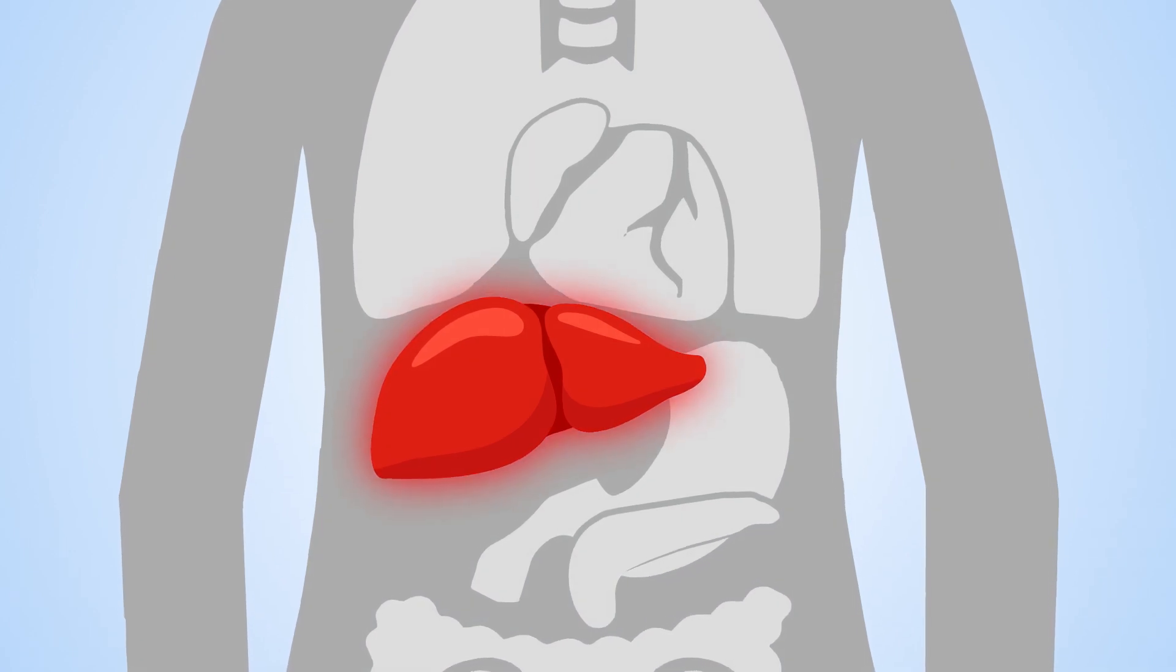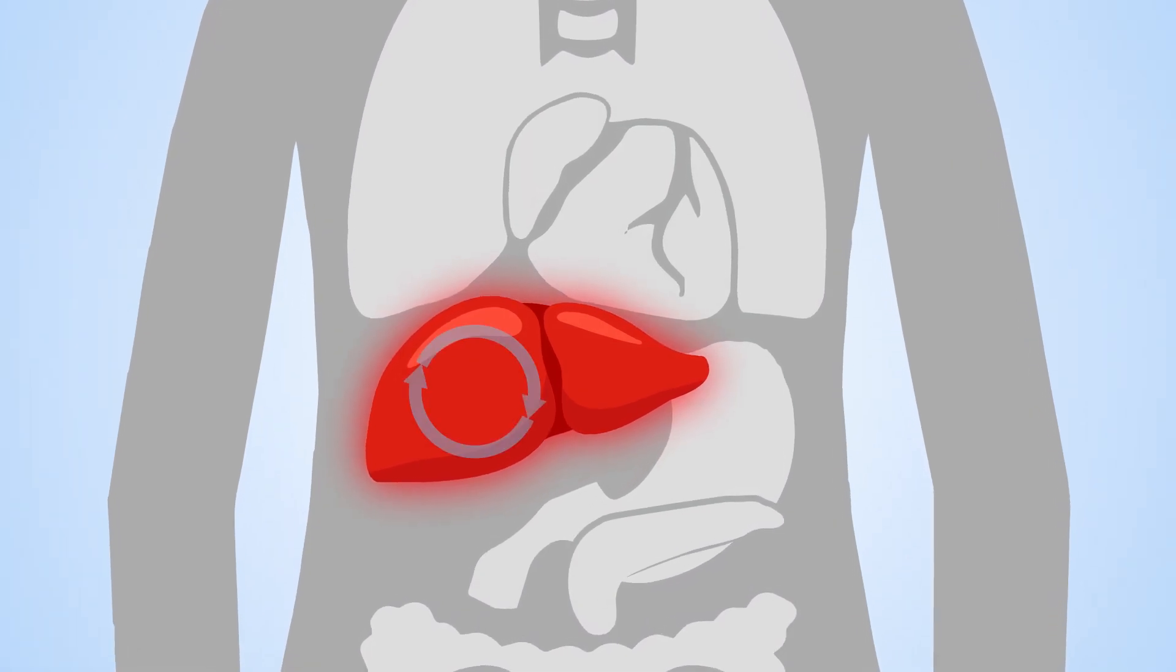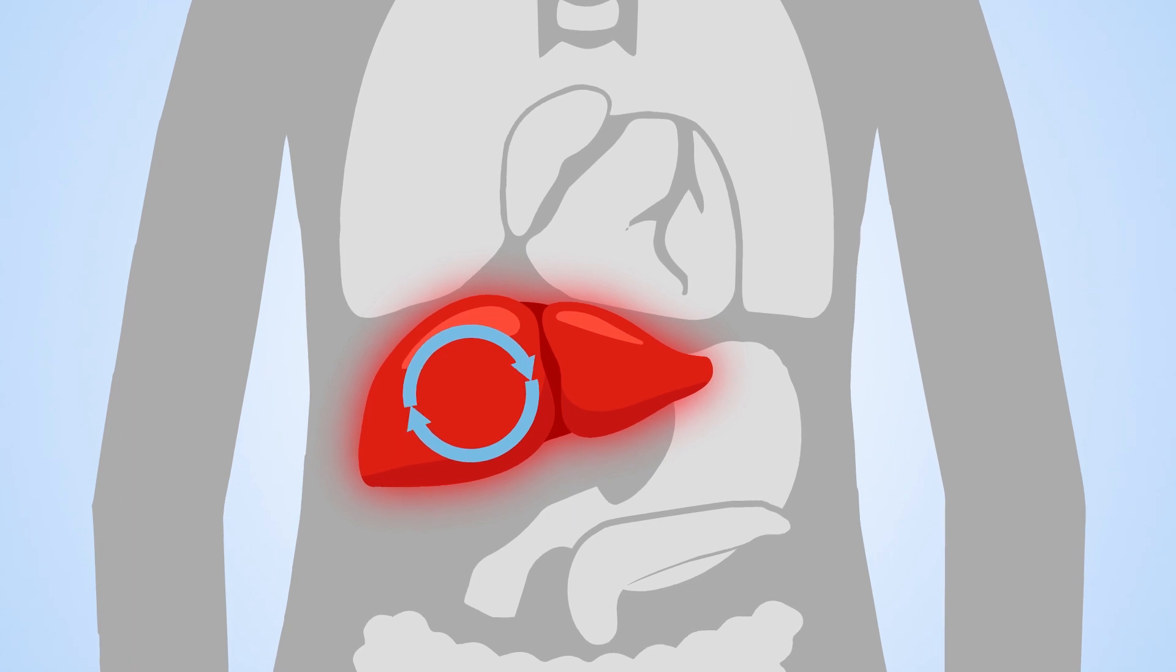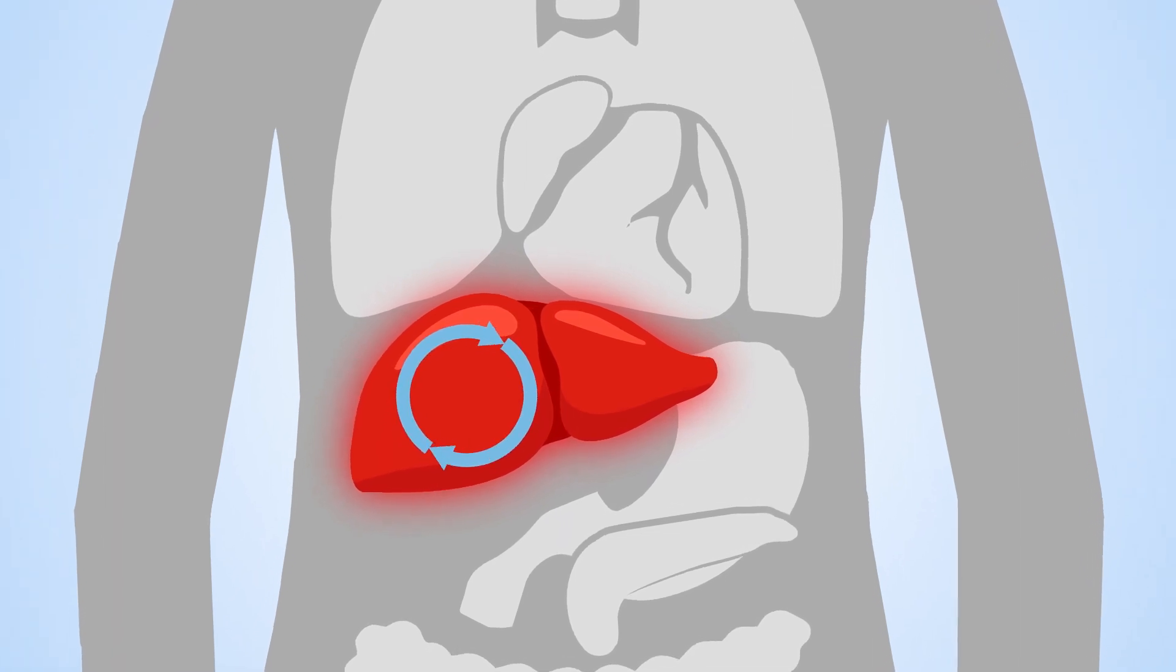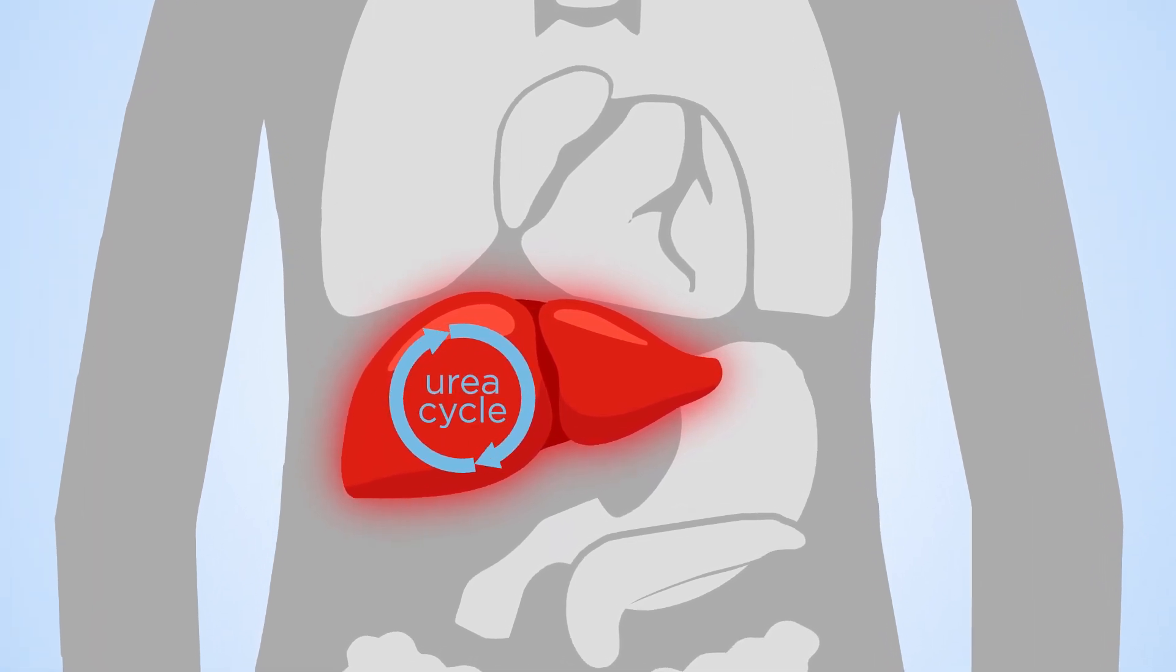Ornithine transcarbamylase, or OTC, helps speed up reactions in the body that break down dietary protein and remove excess nitrogen from the body, a process known as the urea cycle.